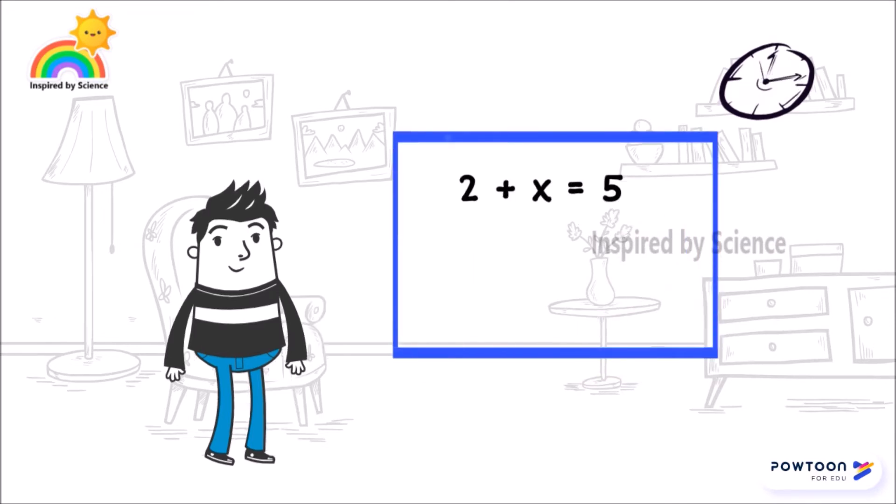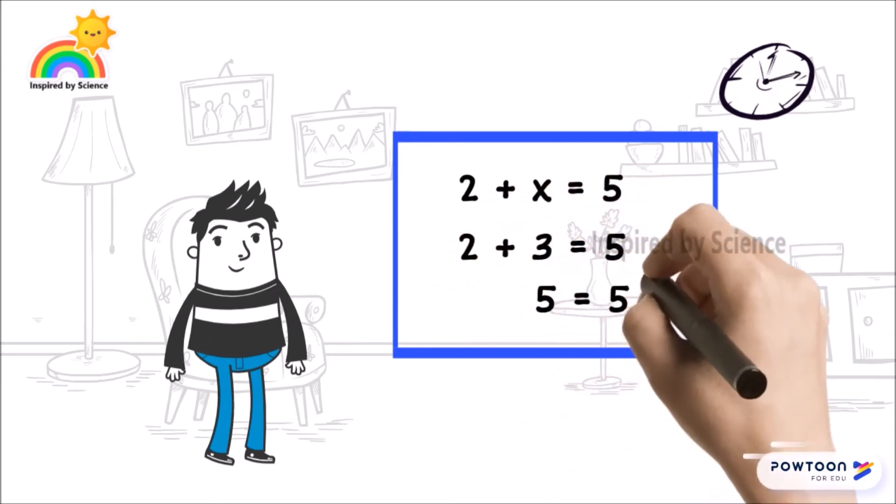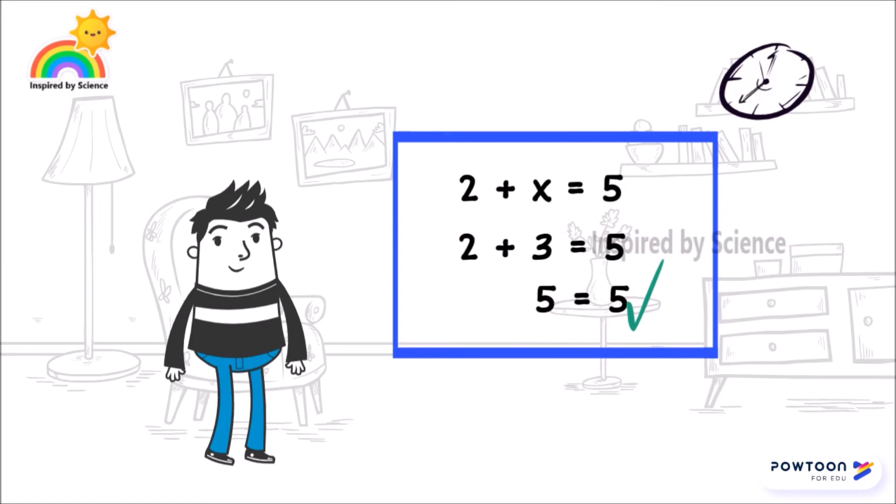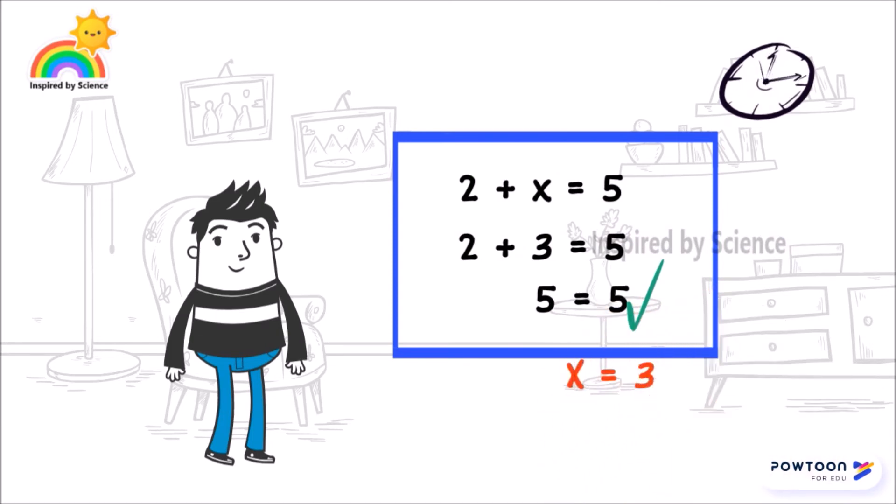When we substitute 3 in place of x, it gives us 2 plus 3 equals 5, and it balances the equation. So the value of x is 3. The equation is resolved and there were 3 gifts in the bag.